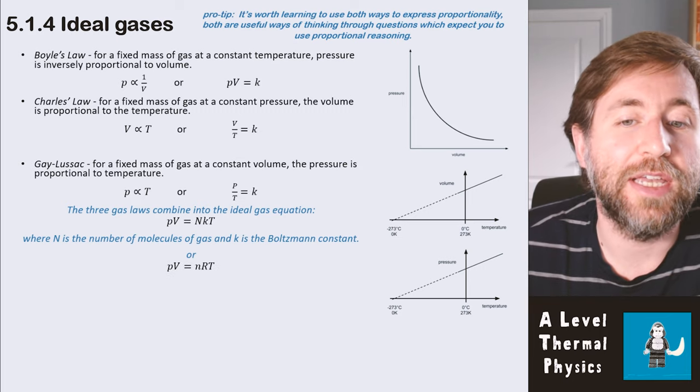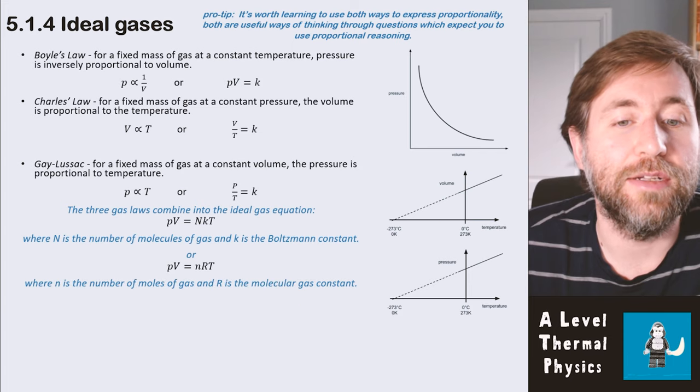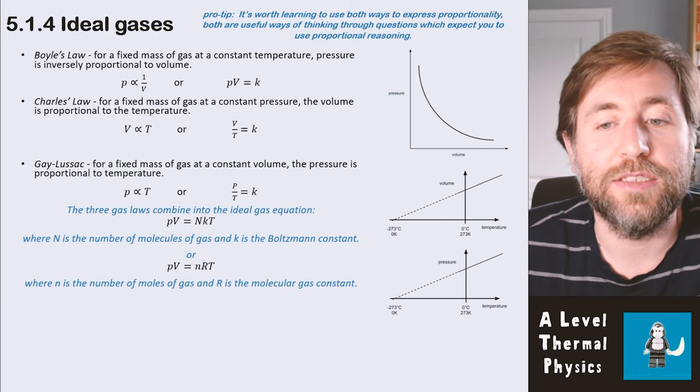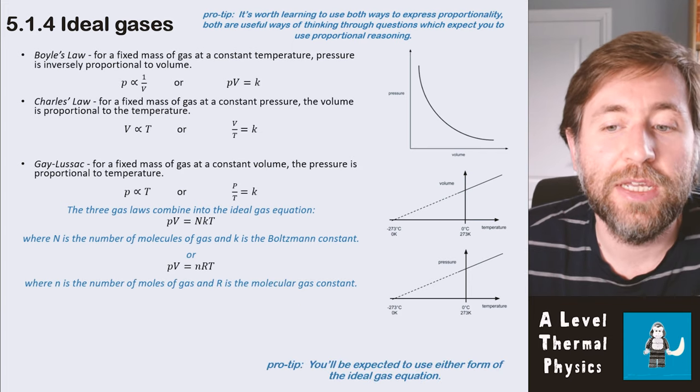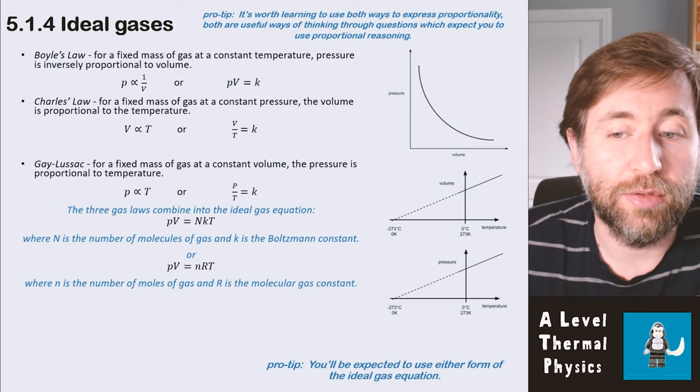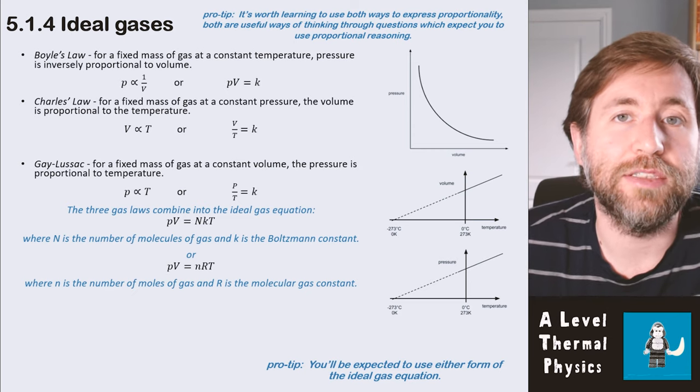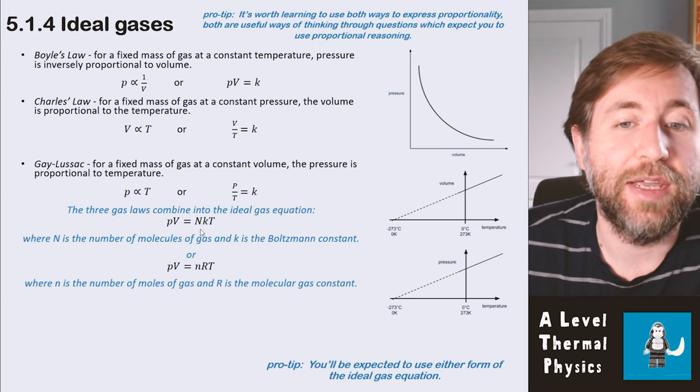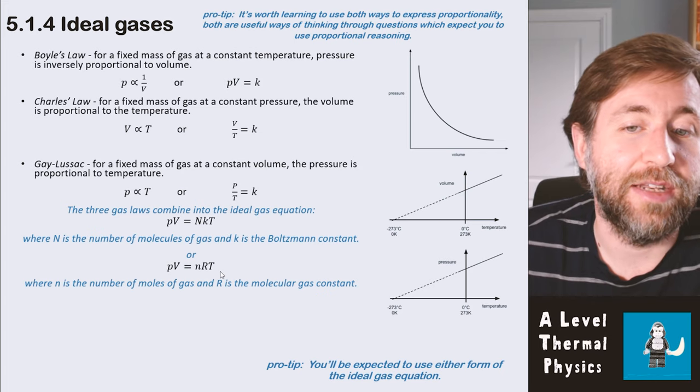And there's also this one: PV = nRT. Now little n is the number of moles and R is the molecular gas constant. You will be expected to use both or either of these ideal gas equations. They are the same thing though. Nk is equal to nR.